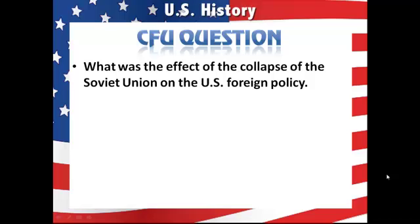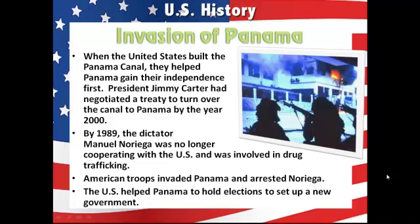CFU question: what was the effect of the collapse of the Soviet Union on U.S. foreign policy? The invasion of Panama: when the United States built the Panama Canal, they helped Panama gain independence. President Carter had negotiated a treaty to turn over the canal to Panama by the year 2000. By 1989, dictator Manuel Noriega was no longer cooperating with the U.S. and was involved in drug trafficking. American troops invaded Panama and arrested Noriega, who was later charged with drug trafficking. The U.S. helped Panama hold elections and set up a new government.